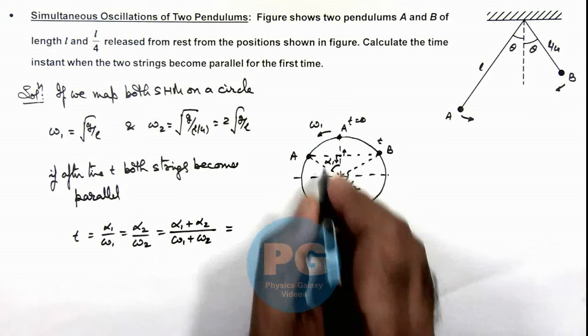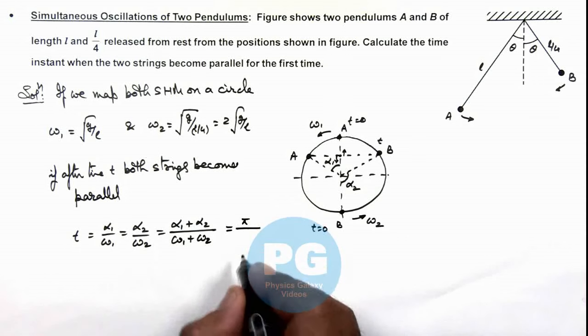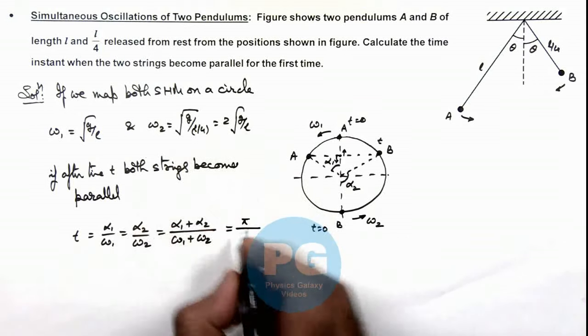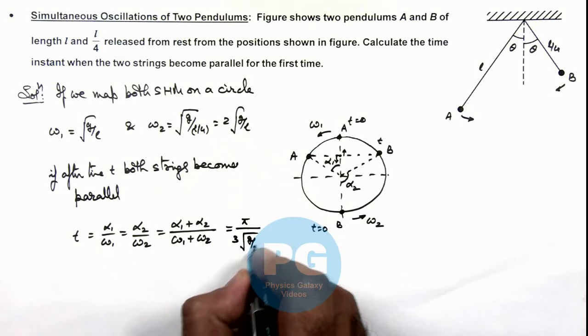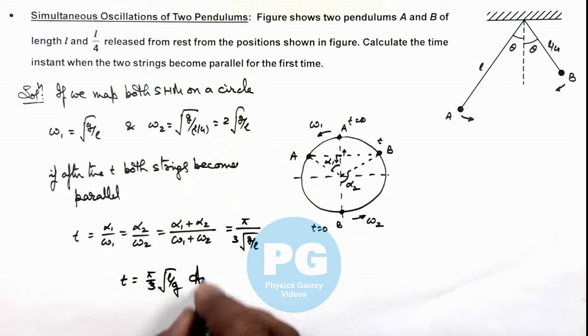So here alpha_1 plus alpha_2 in this situation is pi divided by omega_1 plus omega_2 is 3 times root of g by l. So the result of time we are getting is pi by 3 root of l by g. That is the final result of this problem.